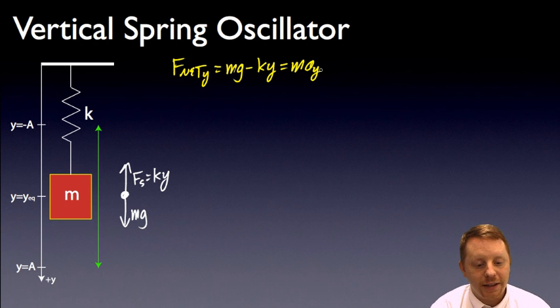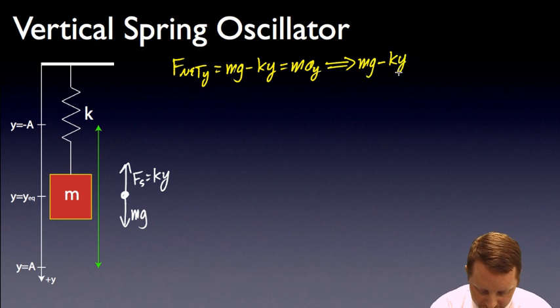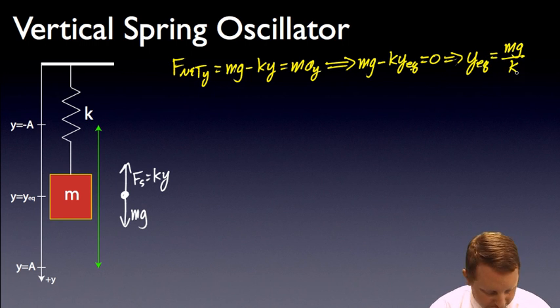And that's going to be equal to mass times the acceleration in the y direction. And if we let it reach equilibrium, then our acceleration is going to be 0. So, that means if it's in equilibrium that mg minus ky in the equilibrium position must equal 0. Or we could say that the equilibrium position of y is just going to be equal to mg over k. So that's where y equilibrium is going to be positioned.